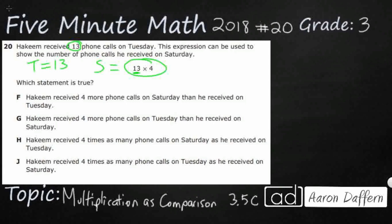And then we just need to read four statements and find one that is true. And you see, it all has to do with this number 4. So we know that he had 13 phone calls on Tuesday, and then something happened. And then on Saturday, we have to do something with 4, what says times 4.